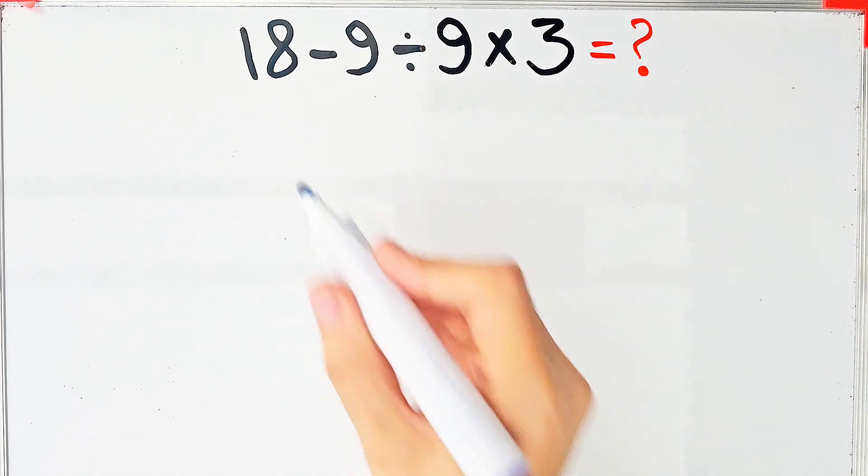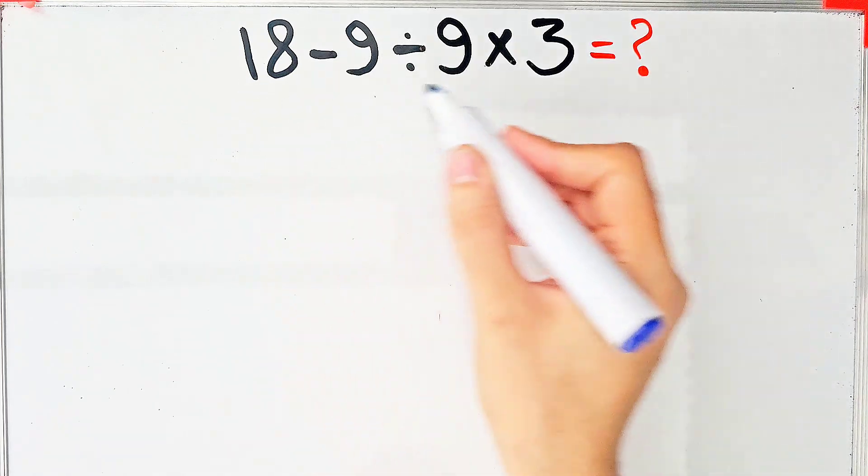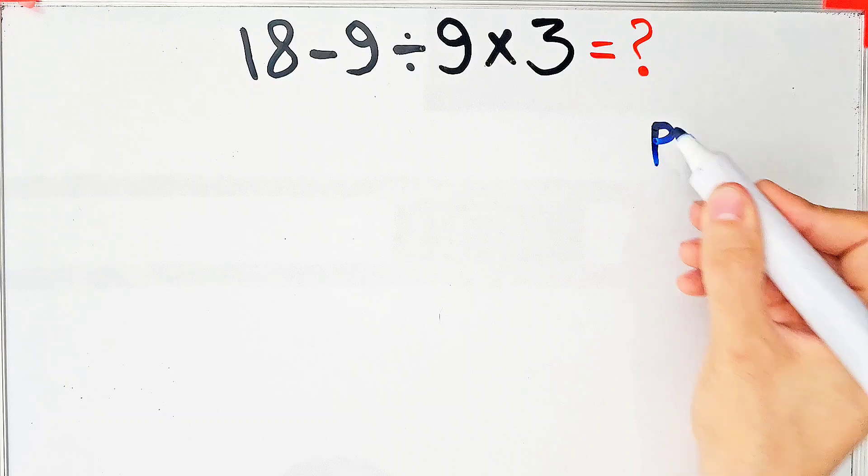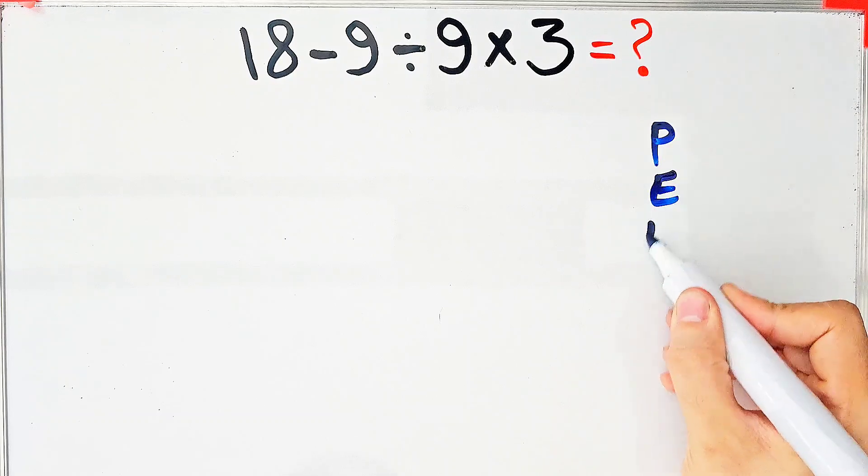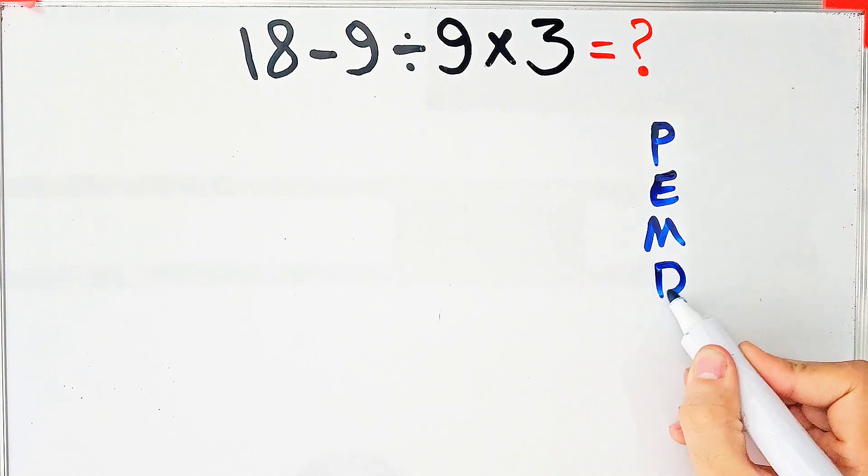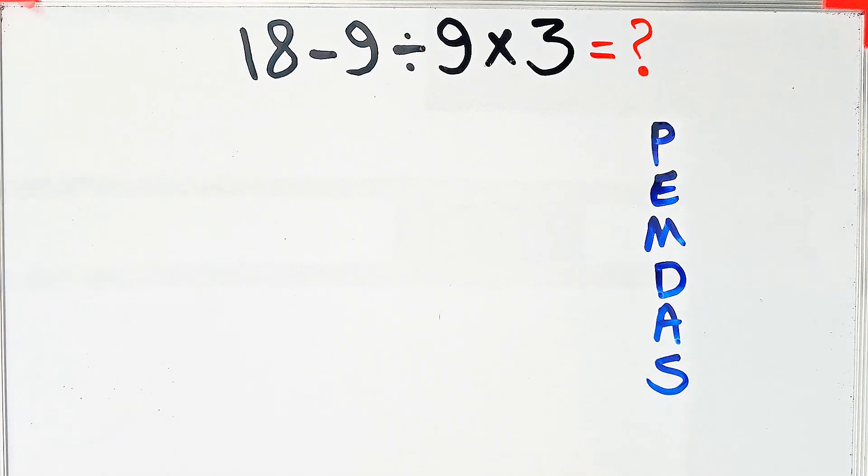Let's solve this question step by step together. To solve this question, we need to follow the PEMDAS rule that shows the priority of the mathematical operations. If you don't pay attention to this rule, you get the wrong answer.